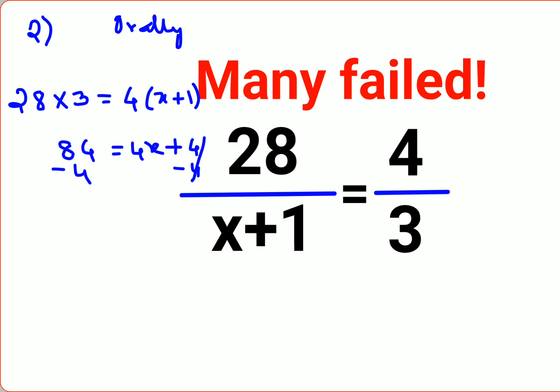So this will cancel and 84 minus 4 gets you 80, and that is equals to 4x.